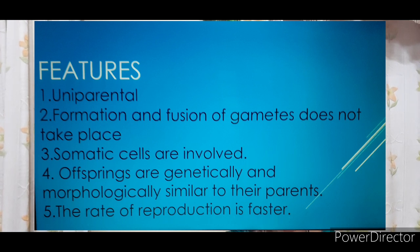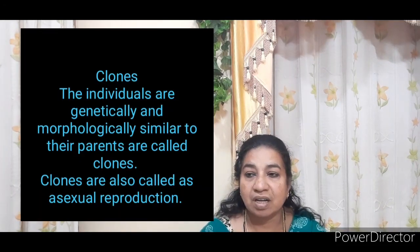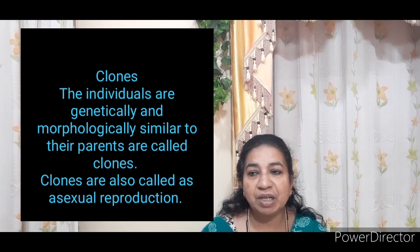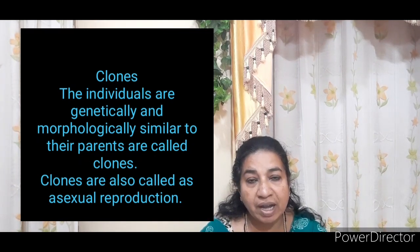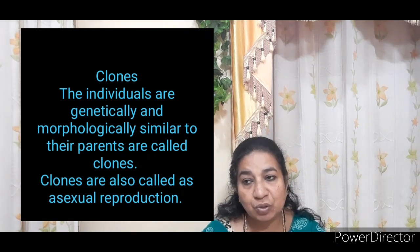Asexual reproduction involves the production of different types of asexual spores such as zoospores and conidia. Asexual spores are genetically similar to their parents. The rate of reproduction is faster. The individuals produced that are morphologically and genetically similar to the parents are called clones. So asexual reproduction is also called cloning.